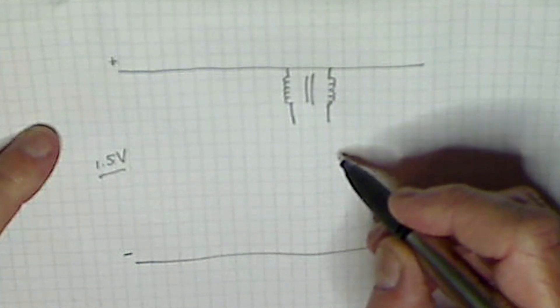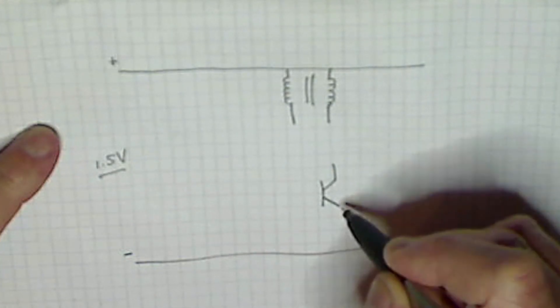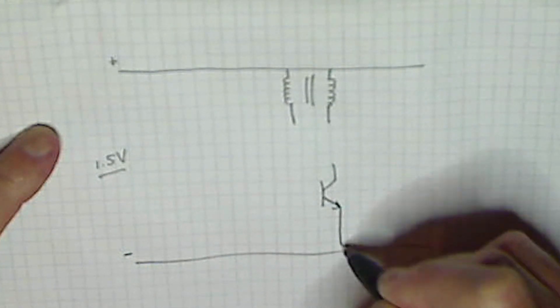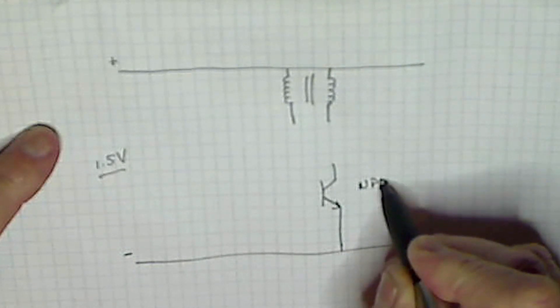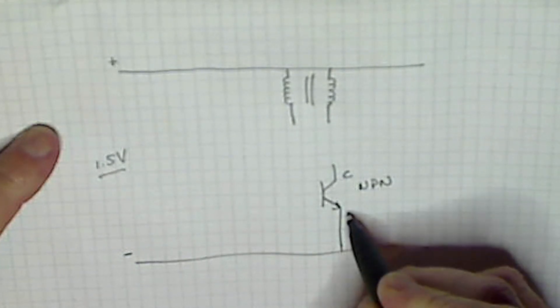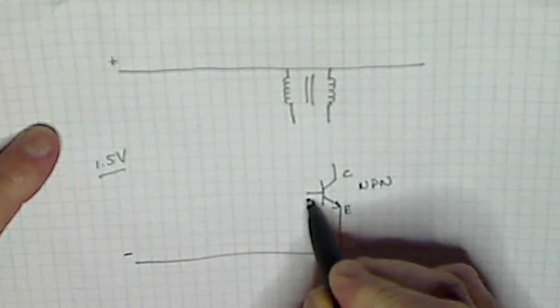Now, very basically, here is your transistor. It's an NPN, this is the collector, the emitter, and this is the base.